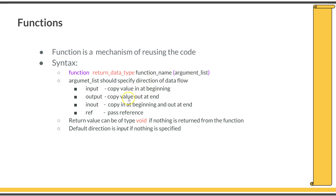In SystemVerilog, each argument must have one of four direction options: input, output, inout, or ref. For input, the values of input variables are copied into local function variables at the beginning of execution. For output, the values are copied out at the end of execution. For inout, copying happens both at the beginning and at the end. If the direction is specified as 'ref', the subroutine uses a pass-by-reference mechanism instead of pass-by-value.